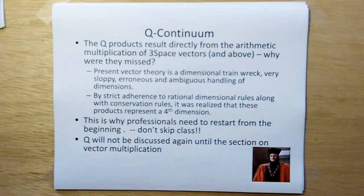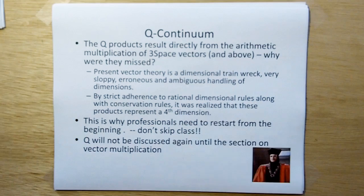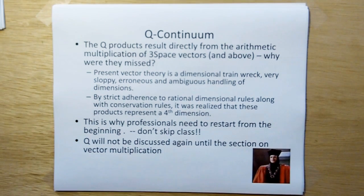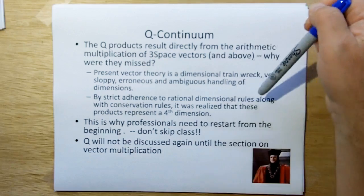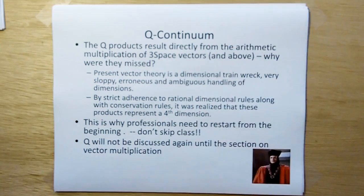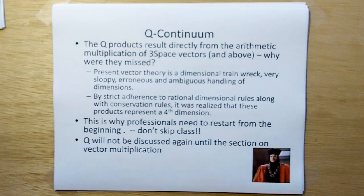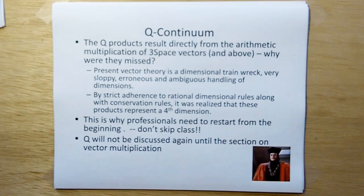The Q products result directly from the arithmetic multiplication of three-space. This is not something I made up. This is not inferred. When we go through the multiplication we're going to find, we have extra stuff that does not fit into what classical theory in vectors tells us should be there. Present vector theory is a dimensional train wreck. It's very sloppy, erroneous, and has ambiguous handling of dimensions. By strict adherence to the rational dimension rules along with conservation, it was realized that these extra products are a fourth dimension, which I call the Q continuum. This is why professionals need to restart from the beginning. So don't skip class, all you physicists, engineers, and mathematicians. We'll not be getting to the Q continuum again until the section on vector multiplication.